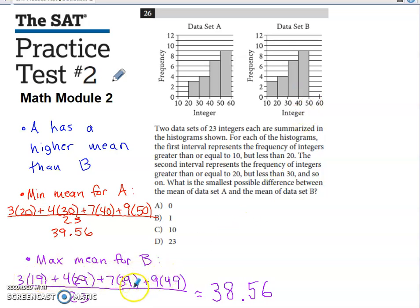Adding all those values up, dividing by 23 to compute the mean, gives me 38.56. So the smallest possible mean for data set A is one larger than the biggest possible mean for data set B. So the smallest possible difference between the means is one.